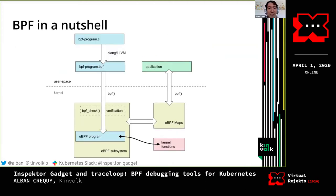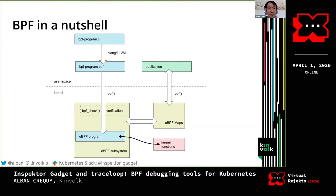I mentioned this uses BPF, so I'll do a short introduction. BPF is a kind of mini virtual machine that runs in the Linux kernel. Usually you write your BPF program in C, compile it to BPF bytecode — it has a specific pseudo-architecture. You can compile it with Clang/LLVM. Once you have this BPF bytecode, you can upload that code into the kernel using the BPF system call. The kernel will then have this BPF program, but it won't be executed yet. First, the kernel uses what is called the BPF verifier.